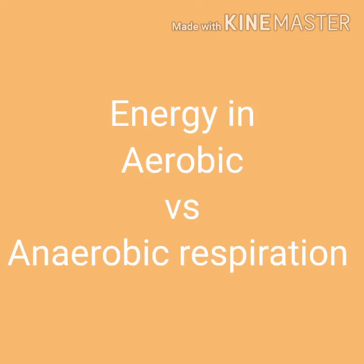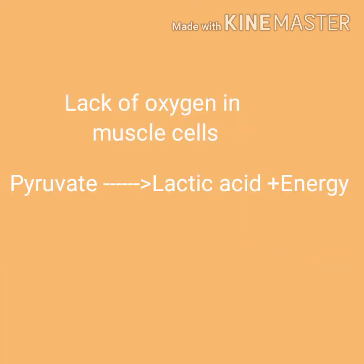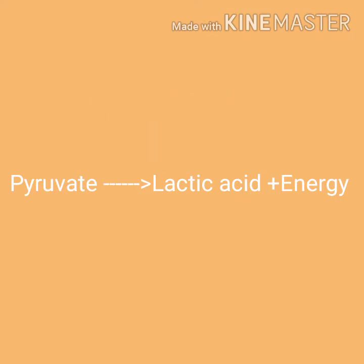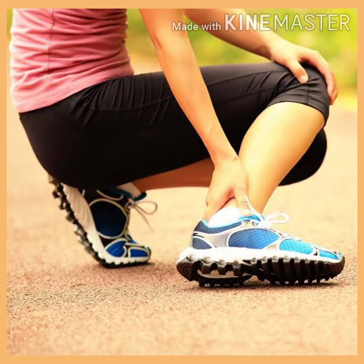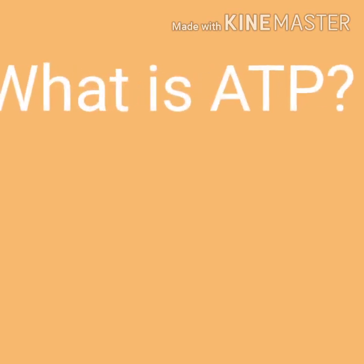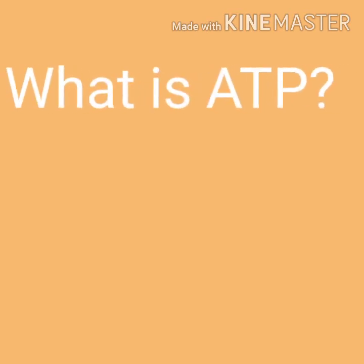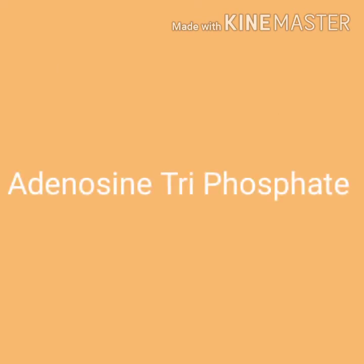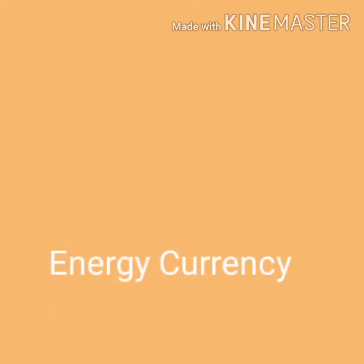The energy produced during aerobic respiration is greater than the energy produced in anaerobic respiration. Sometimes, when there is a lack of oxygen in our muscle cells, the pyruvate molecule is converted into lactic acid, which is also a 3-carbon molecule. The formation of lactic acid in our muscles causes painful muscle cramps during sudden activity. The energy released during cellular respiration is immediately used to synthesize a molecule called ATP, also known as adenosine triphosphate. This ATP is the energy currency for most cellular processes.